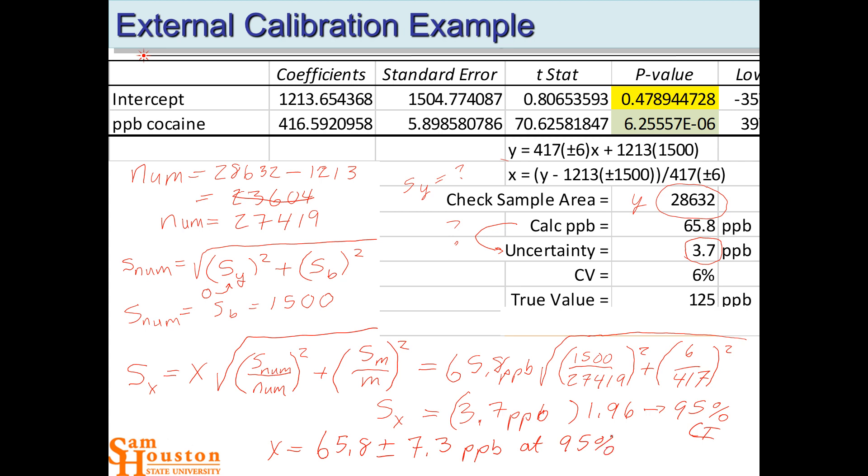So that's at, and you put that at 95%. So you're telling them this is the confidence interval, not just plus or minus S. Make sense? Okay.